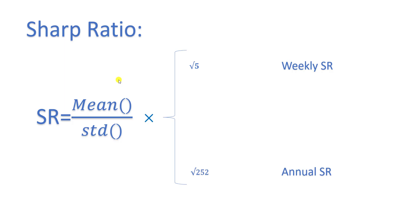In the next section, we use Python programming language to first grab and download data for Amazon and Apple, and then calculate the standard deviation, average, and Sharpe Ratio for them and plot them.